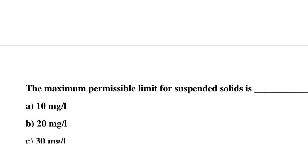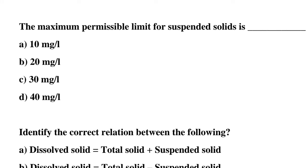Next question: the maximum permissible limit for suspended solids is option A: 10 mg per liter, option B: 20 mg per liter, option C: 30 mg per liter, option D: 40 mg per liter. The correct answer is option C: 30 mg per liter.